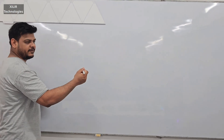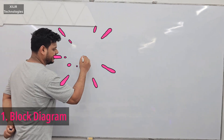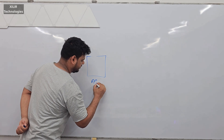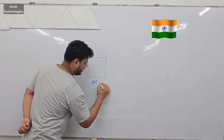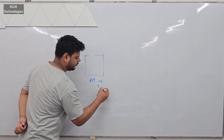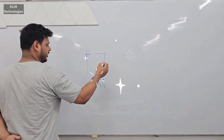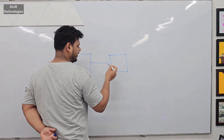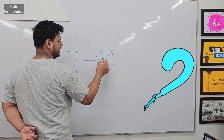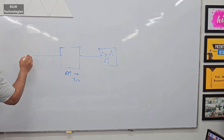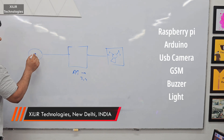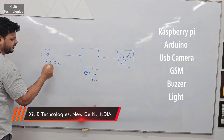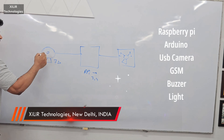First of all I will start with the block diagram. We are using the Raspberry Pi — any model you can use here: 3, 4, 4GB, 8GB, etc. And you need one camera. Any camera you can use: 720p, 480p, whatever you get on the market — USB camera.